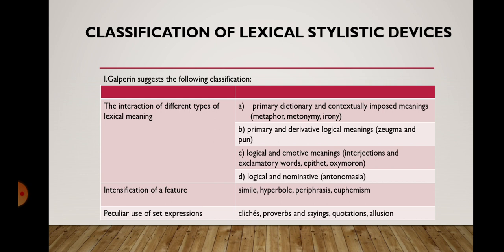The interaction of primary and derivative logical meanings — to this group belong zeugma and pun. The interaction of logical and emotive meanings includes interjections and exclamatory words. Epithet and oxymoron are in this group. And the interaction of logical and nominative meaning — this is antonomasia.